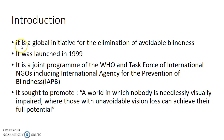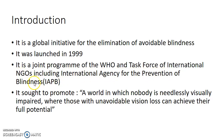Vision 2020: The Right to Sight is a global initiative for the elimination of avoidable blindness. It was launched in the year 1999. It is a joint program of the World Health Organization and the task force of international NGOs, which includes many agencies like the International Agency for the Prevention of Blindness.